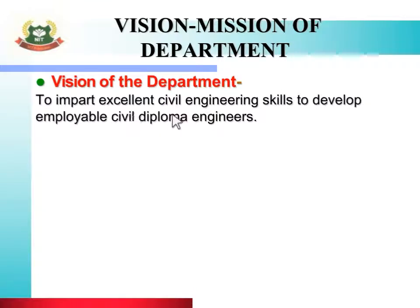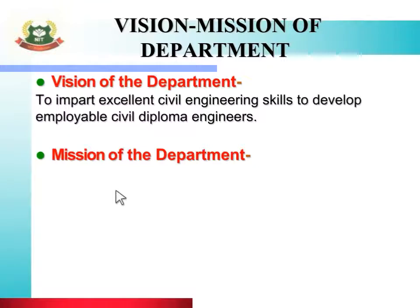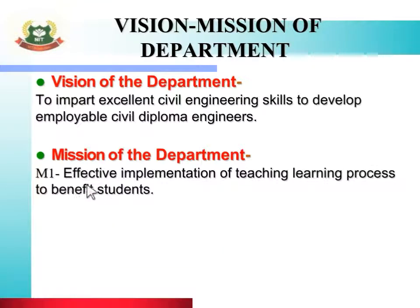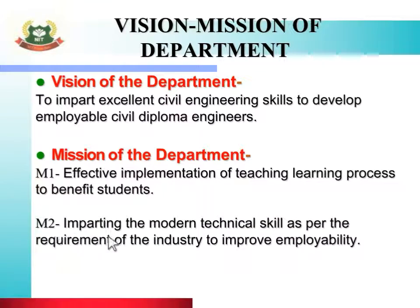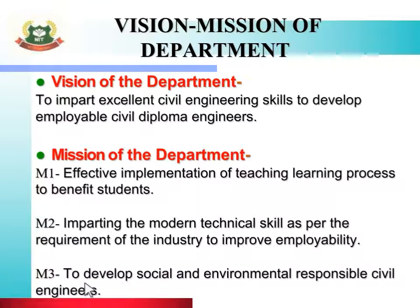Let us see the vision and mission of the department. The vision of the department is to impart excellent civil engineering skills to develop employable civil diploma engineers. To achieve this vision there are 3 missions. Mission 1 is effective implementation of teaching learning process to benefit students. Mission 2 is imparting modern technical skills as per the requirement of industry to improve employability. Mission 3 is to develop socially and environmentally responsible civil engineers.